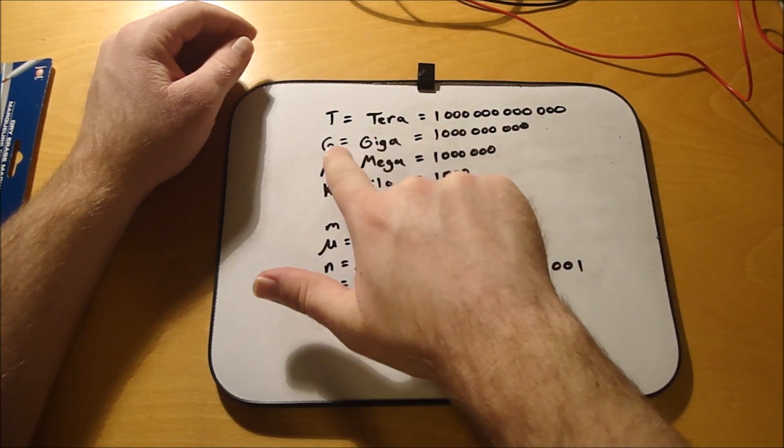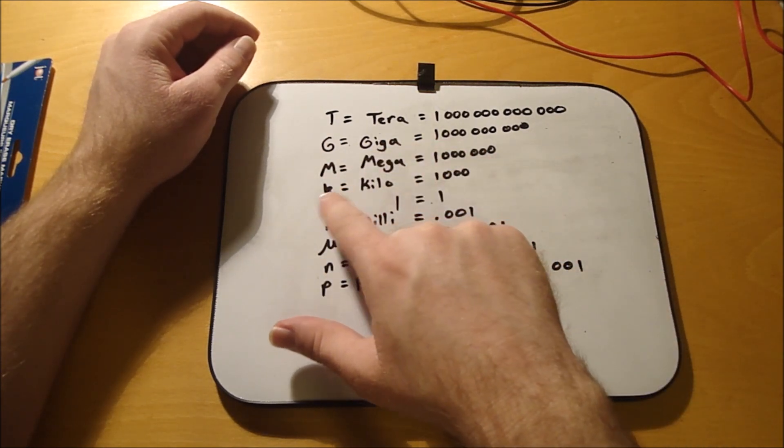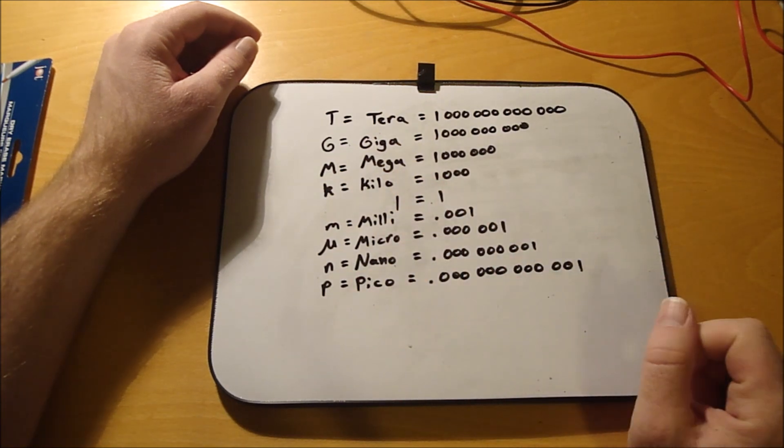So also just wrote them all out here. So one tera is a capital T, one giga is a capital G, one mega is a capital M, and then one kilo is a lowercase k.